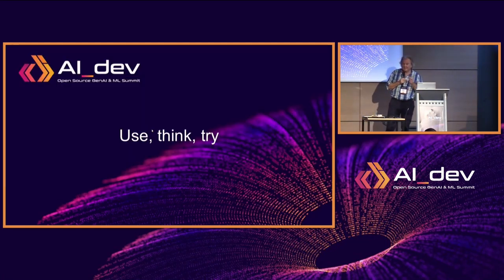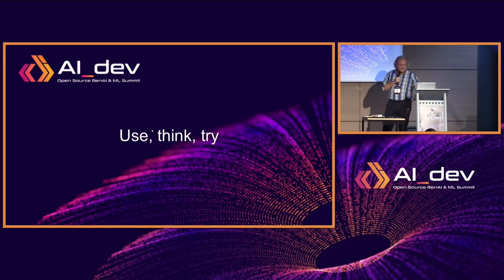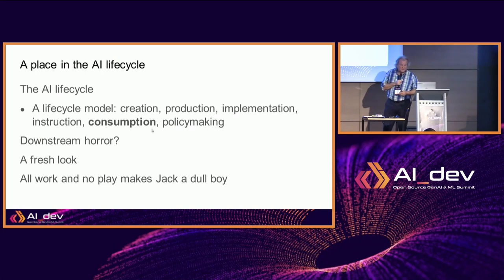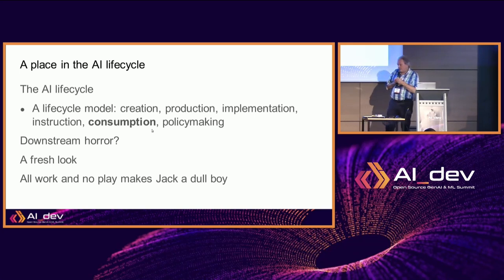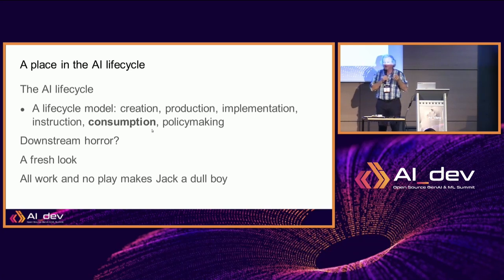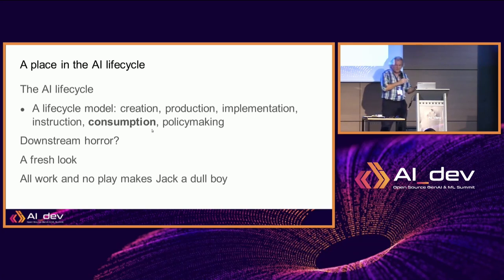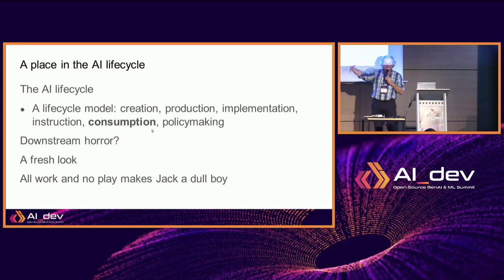The second part has three components: use, think, and try. The first part — use — has everything to do with labels, as discussed in the previous session. As a creative developer, you are not the developer of the AI; you are the user, the consumer of the AI. Of course, the AI has a lot behind it before being used: the creator, the production team, the implementer, the instruction side, the teachers, and the policy makers. All those creation, production, implementation, and instruction phases are before you get the tool.